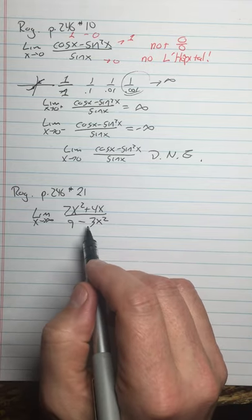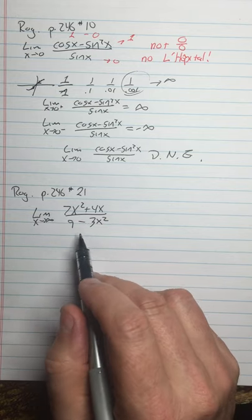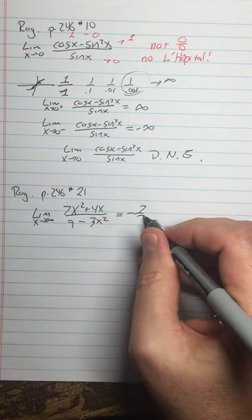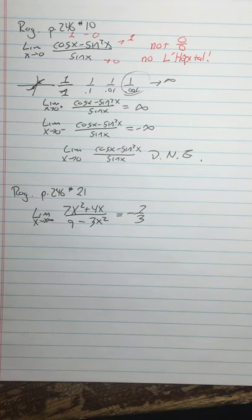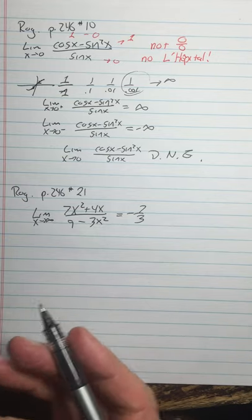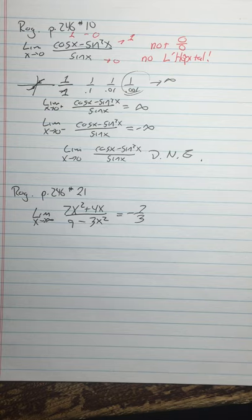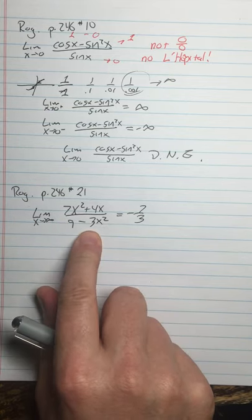Second comment, you could apply L'Hopital's rule to this, but why would you? This is a horizontal asymptote of a rational function. The limit is negative 7 thirds, just by coefficients of the leading terms. So you don't need L'Hopital's rule for that. That's why I've been a little selective in terms of what I'm going to assign to you from this page. I don't want you to do problems like this where you don't need L'Hopital's rule, but do watch out for ones where you cannot apply L'Hopital's rule.